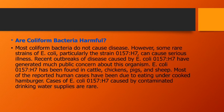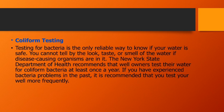E. coli has been found in cattle, chicken, pig, and sheep. Most reported human cases have been due to eating undercooked food such as hamburger. E. coli O157:H7 can also be caused by contaminated drinking water supplies, which is why coliform testing of water is important.